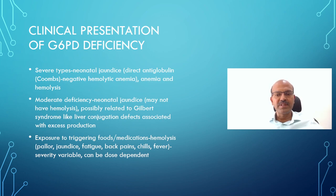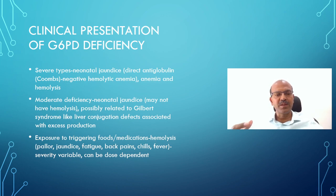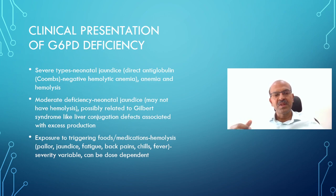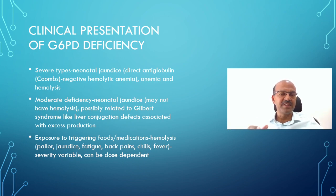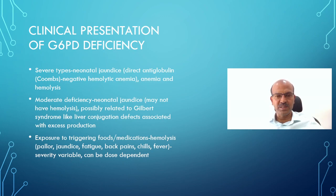Exposure to triggering foods and medications which produce hemolysis may be another manifestation. When there is a sudden trigger, the child presents with acute pallor and jaundice — which is difficult to pick up in older children; you need to specifically look for it in good lighting in the sclera. Fatigue, back pains, chills, and fever may also be present, as the chills and fever are related to the hemolysis. The severity is variable and can be dose dependent according to what you are exposed to.